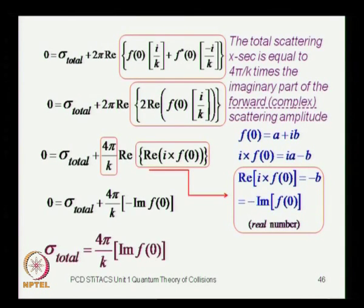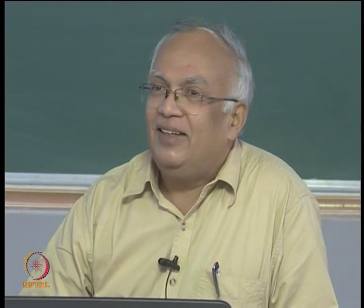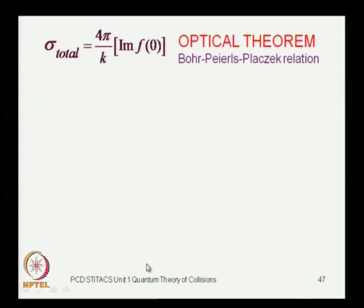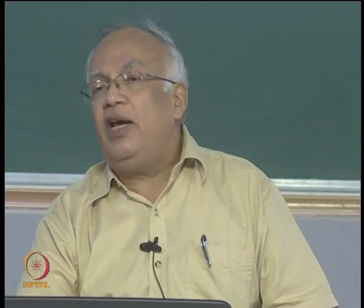This is the optical theorem — also known as the Bohr relation. It tells us that the total cross section equals 4π/k times the imaginary part of the forward scattering amplitude. Its origin is in the equation of continuity — it is essentially a statement of conservation of flux. You are not creating or destroying particles; it is rooted in conservation of flux. It is analogous to an optical effect, which is why it is called the optical theorem: when light meets an obstacle it is scattered in various directions and there is diminished intensity behind it — a shadow effect.